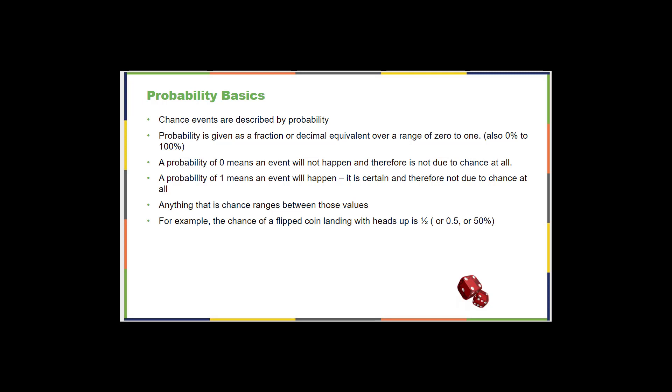When it comes to those numbers, a probability of 0 means that an event will not happen, cannot happen. A probability of 1 means that an event will definitely happen. It's certain, it's 100%, and then anything in between is considered a range. So you can see more examples of those numbers. So if you flip a coin, you have a 50-50 chance, that's how you usually hear it said, of that coin landing on heads. So that's a one half percent. Or you can think of it as a decimal, 0.5. Or you can think of it as a percentage, which is 50%.